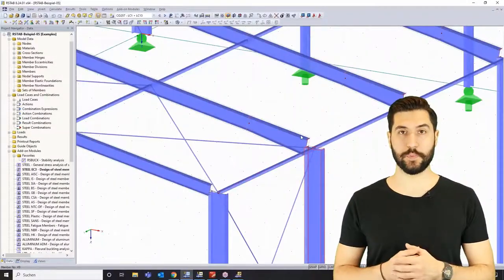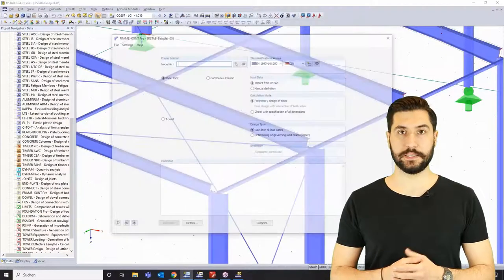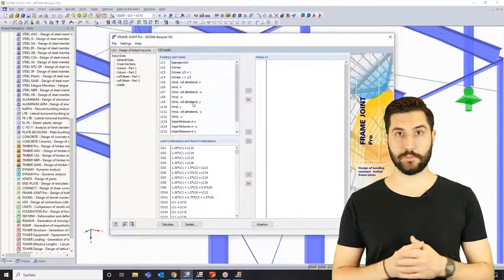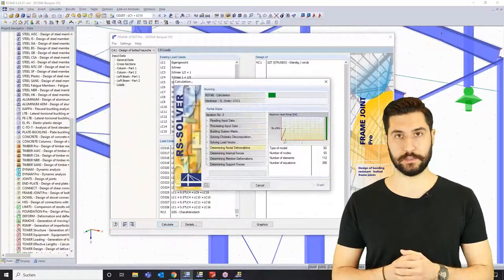This training is an introduction to the standard compliant design of steel structures with the structural analysis software R-STOP. The theory is complemented by practical examples and explained by using our add-on modules.